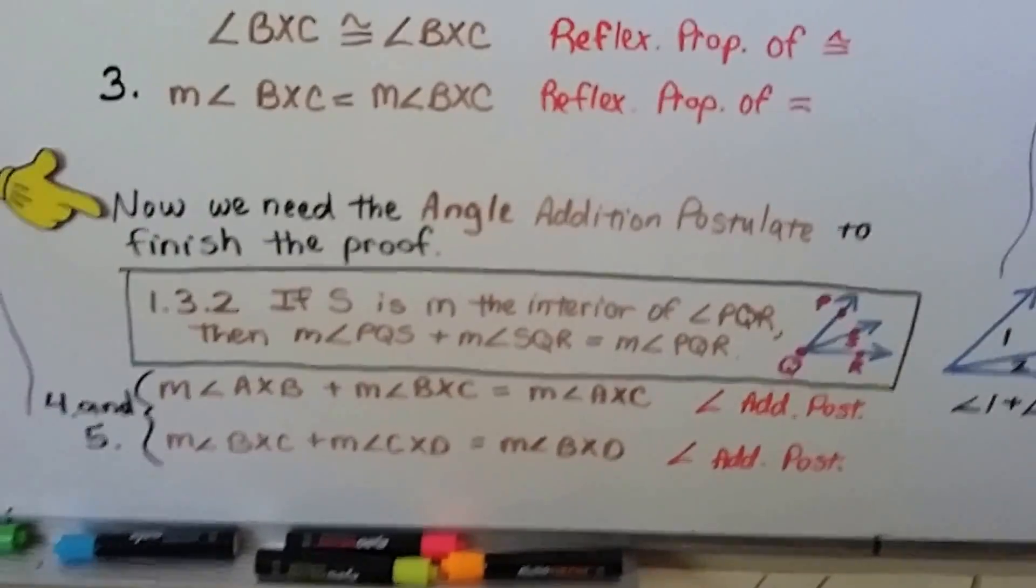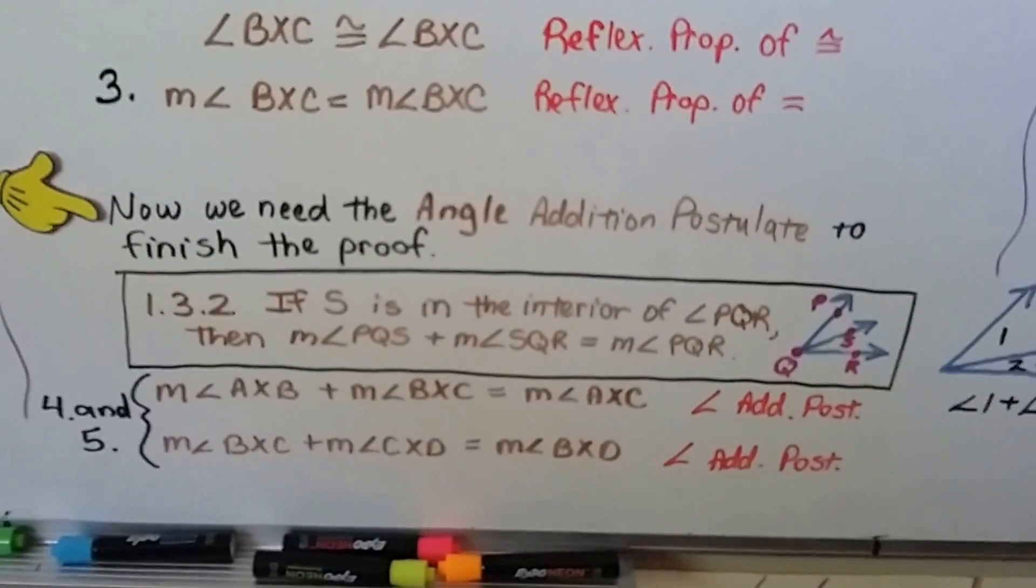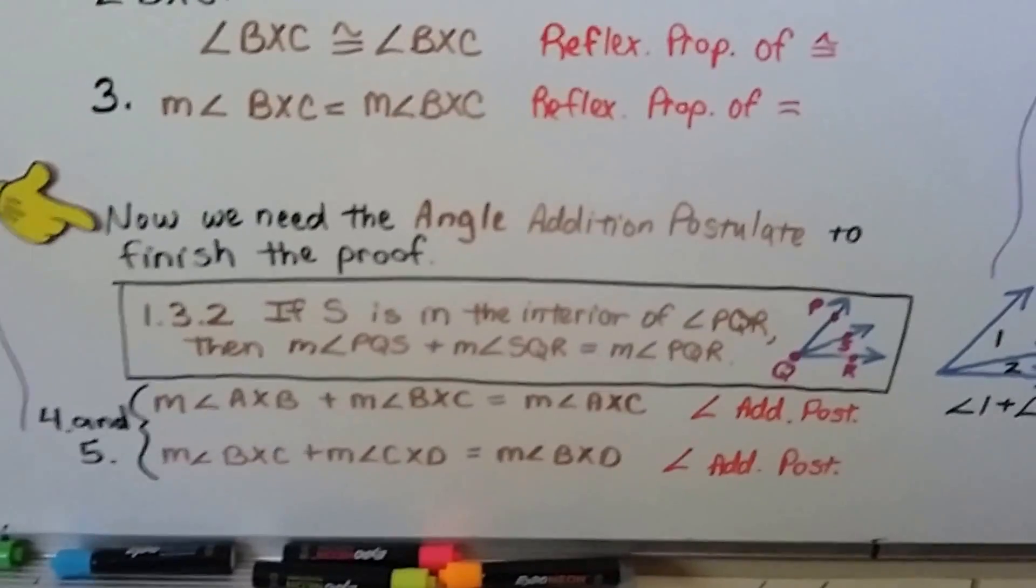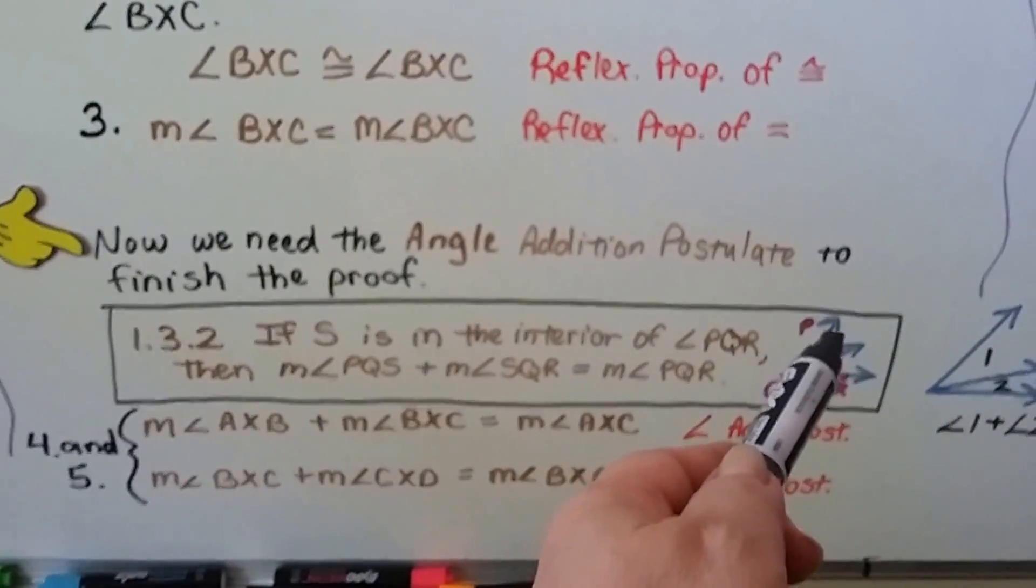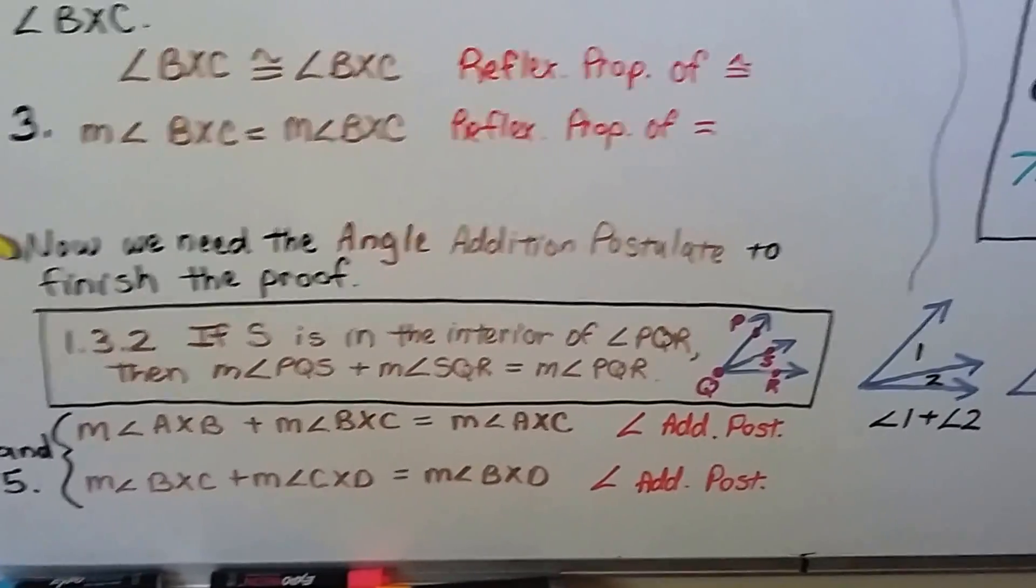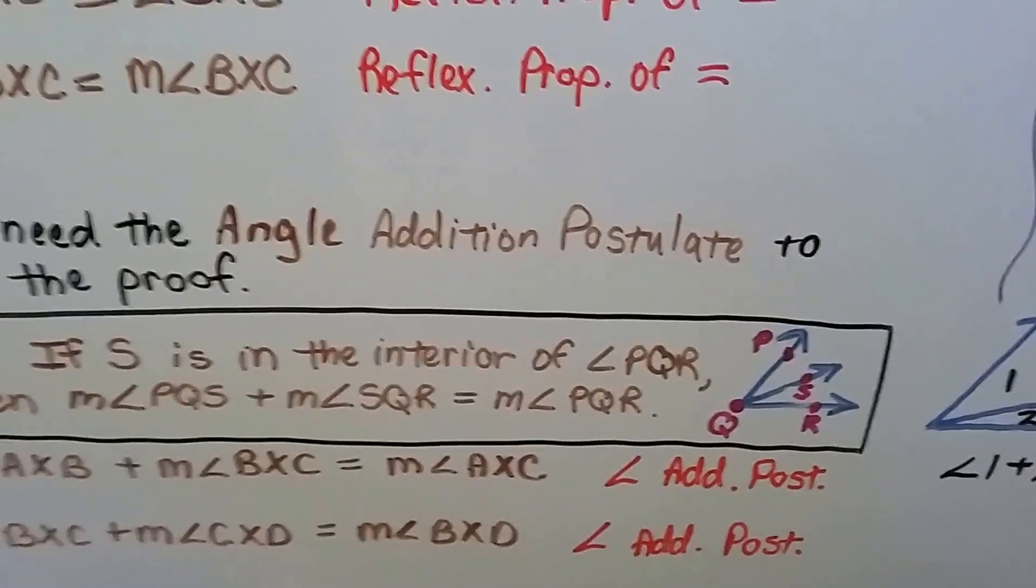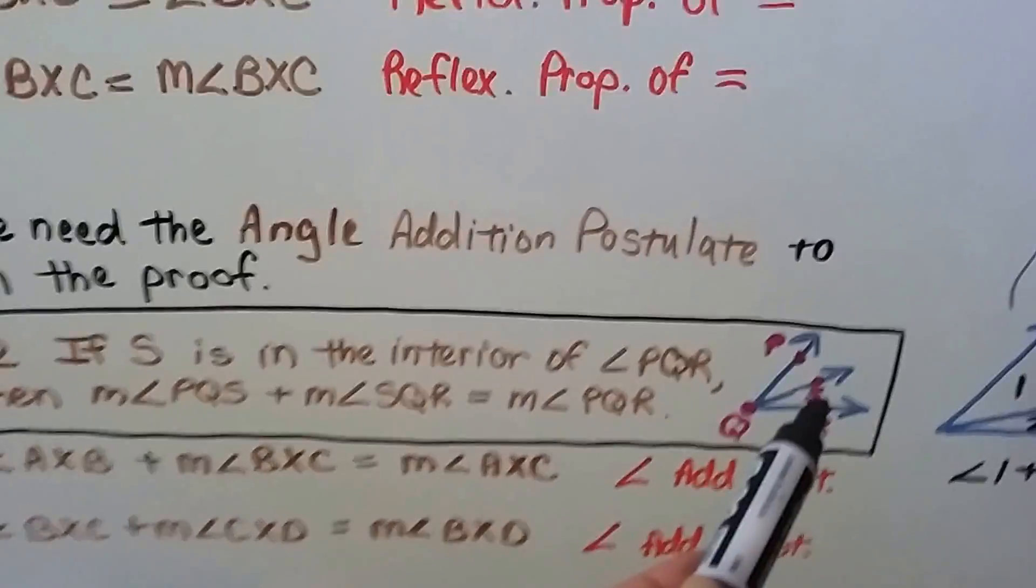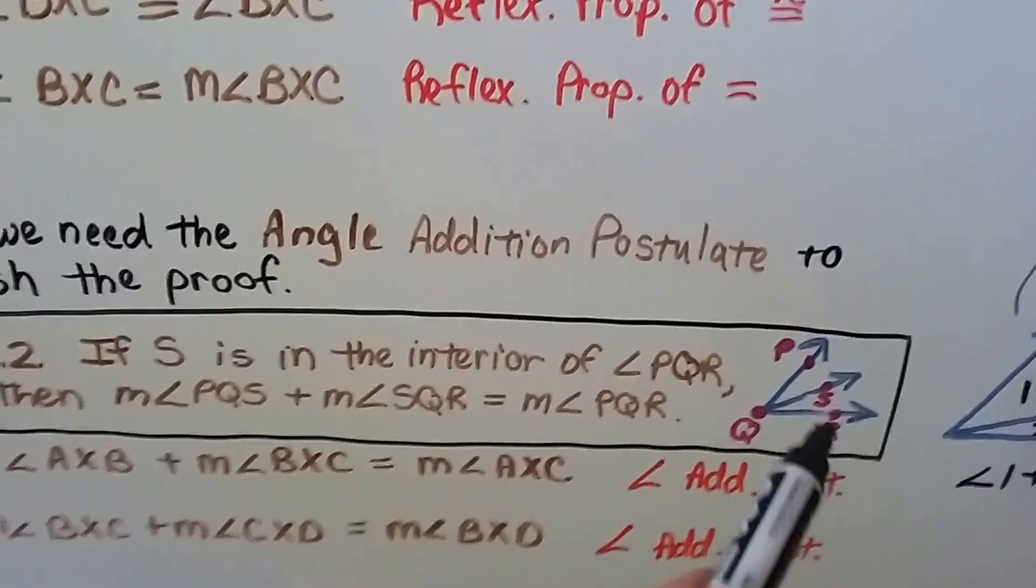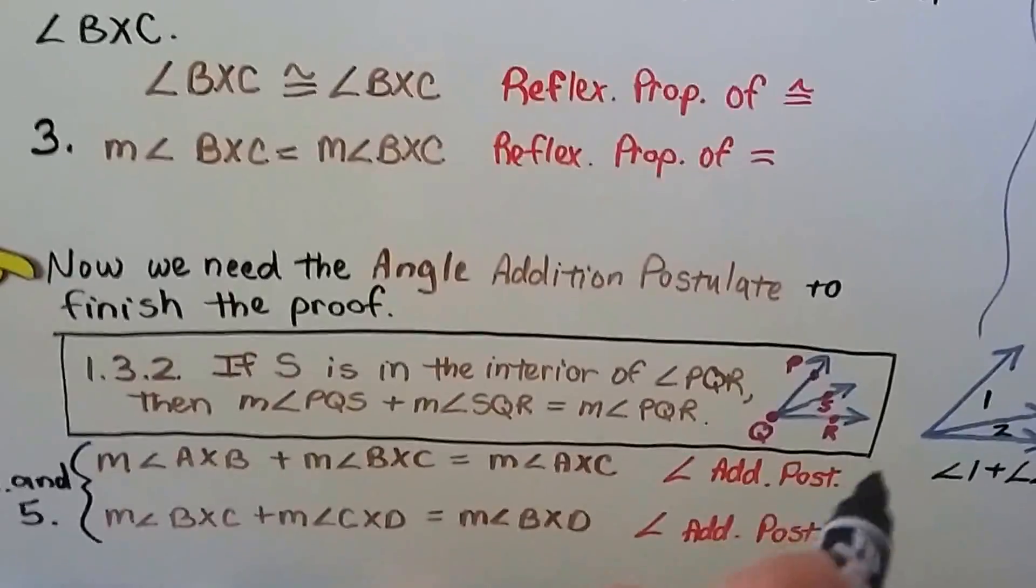Now we need the angle addition postulate to finish the proof. We learned about this in Chapter 1, Lesson 3. If S is in the interior of angle PQR, then the measure of angle PQS, this top angle, plus the measure of angle SQR, this bottom angle, is going to equal the measure of the whole thing, angle PQR.